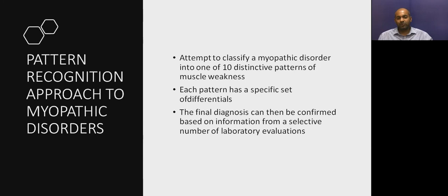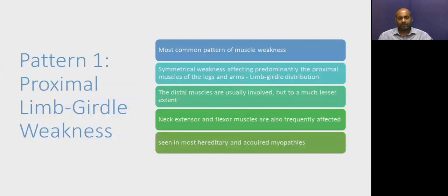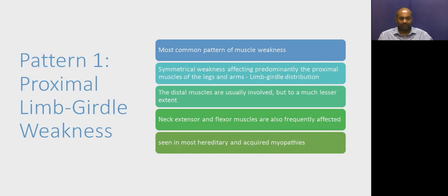After examination, we can attempt to classify myopathic disorders into 10 distinctive patterns of muscle weakness. Each pattern has a specific set of differentials, and final diagnosis is confirmed based on selective laboratory values. The most common pattern is proximal limb girdle weakness — symmetric weakness affecting predominantly the proximal muscles of both legs and arms, also known as the limb girdle distribution. Distal muscles are usually involved to a lesser extent. This is the pattern synonymous with myopathy and is seen in most hereditary and acquired myopathies.